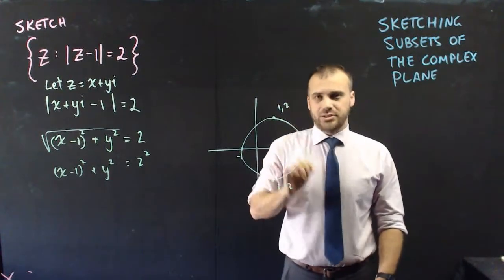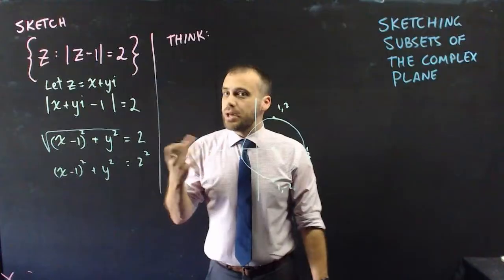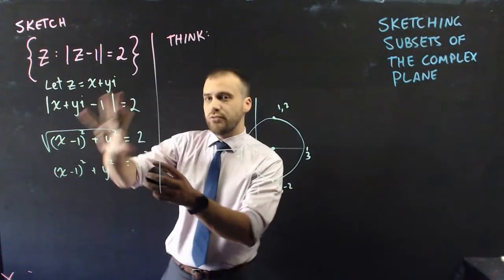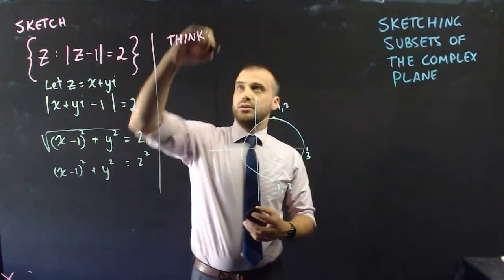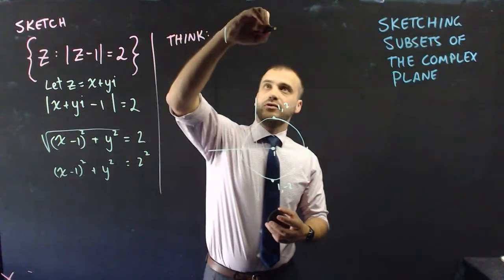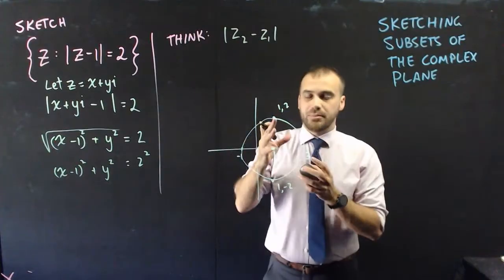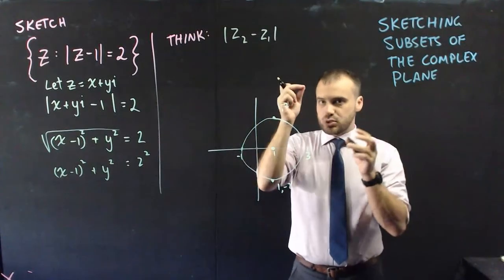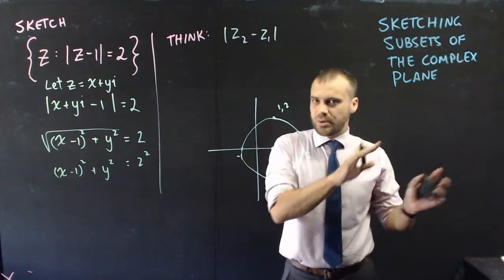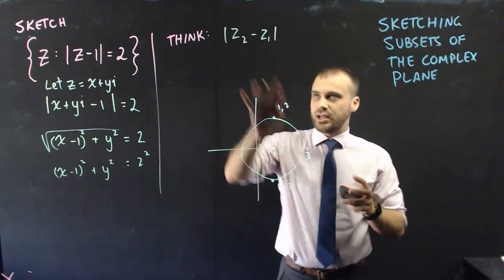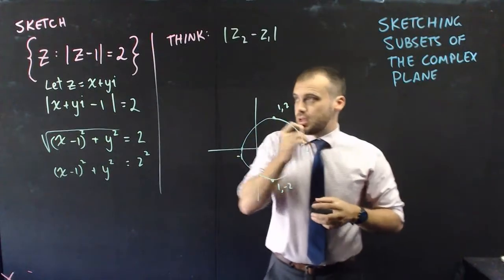You can also think about it geometrically. The magnitude between two complex numbers is the distance between their points on an Argand diagram. So |z − 1| is the distance between z and the point 1 on the real axis.